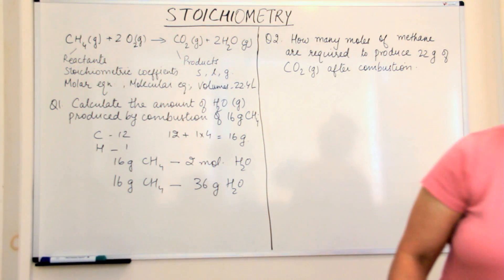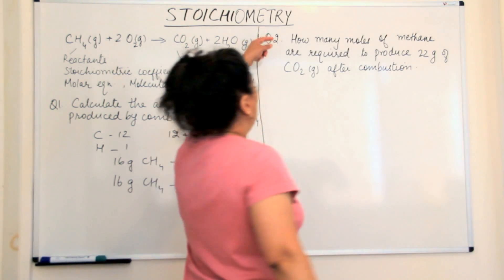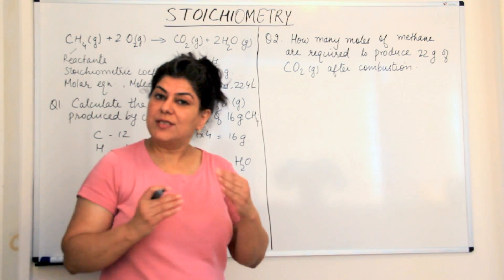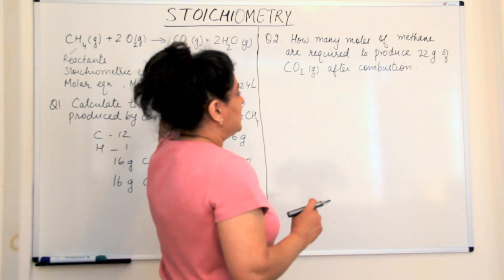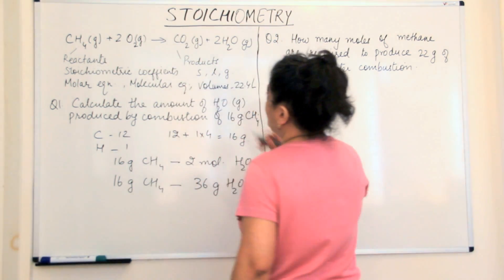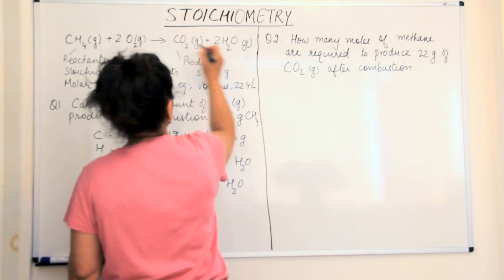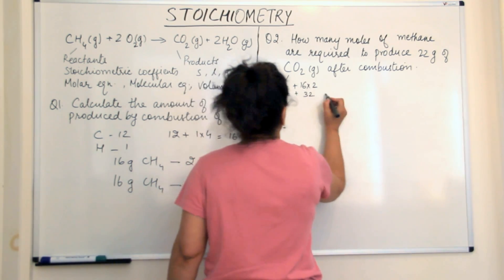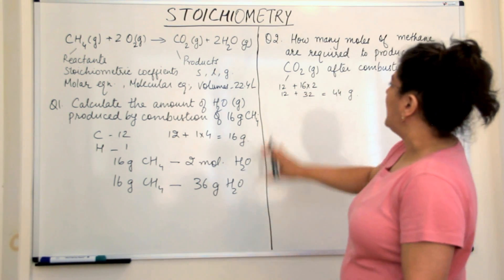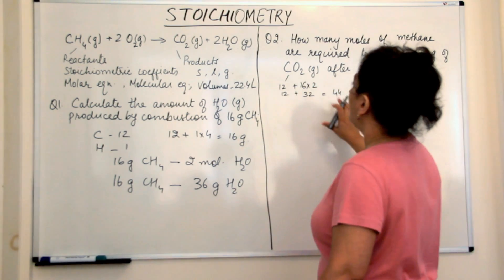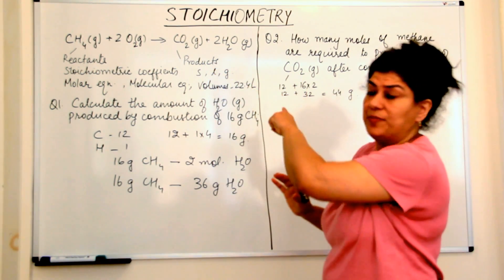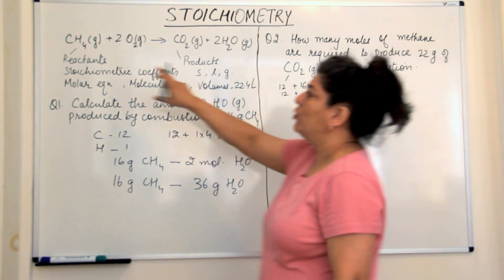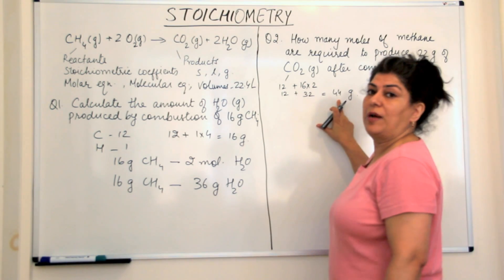Let us come to the next problem: how many moles of methane are required to produce 22 grams of carbon dioxide after combustion? This is a little more complicated. Let us calculate the molar mass of carbon dioxide: carbon has a mass of 12, oxygen has a mass of 16, and there are 2 oxygens. So carbon dioxide is 12 + (16 × 2) = 12 + 32 = 44 grams. According to this balanced chemical equation, we obtain 44 grams of carbon dioxide from 1 mole of methane.